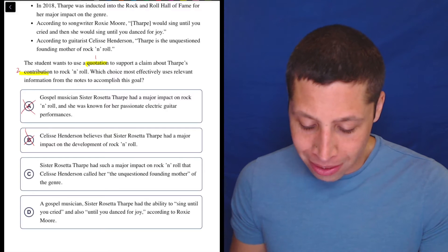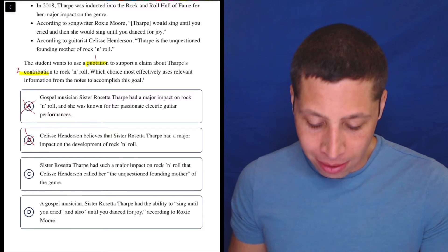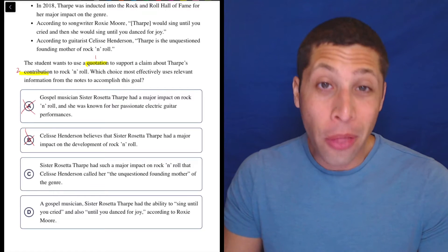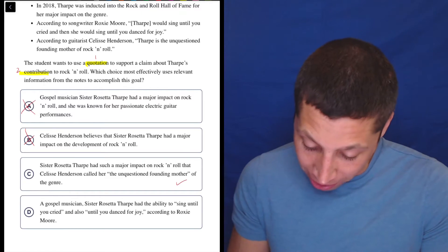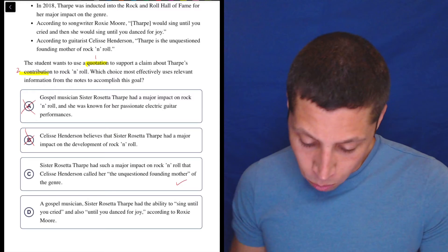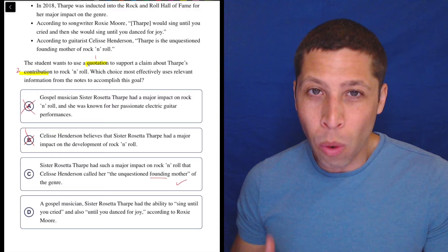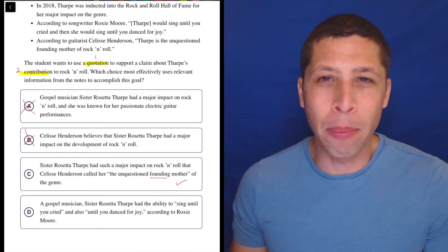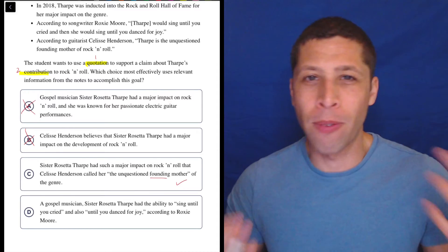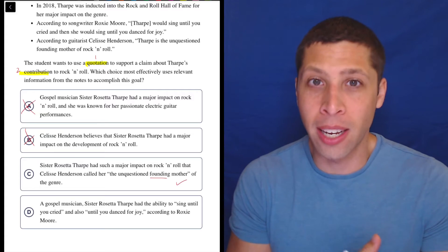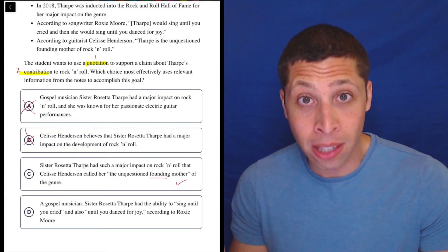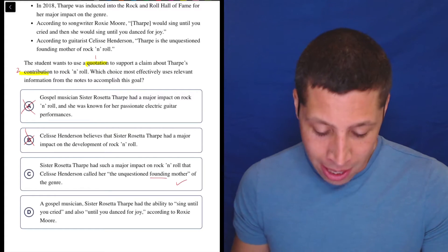C: Sister Rosetta Tharp had such a major impact on rock and roll that Solis Henderson called her 'the unquestioned founding mother of the genre.' Well, that sounds like both a quote—we have it right here—and what is her contribution? She's a founding mother, so it's kind of a vague contribution, but it's a contribution: you helped found the genre, you're early on in it. That might be it. I'm not convinced, but at least it has the quote.